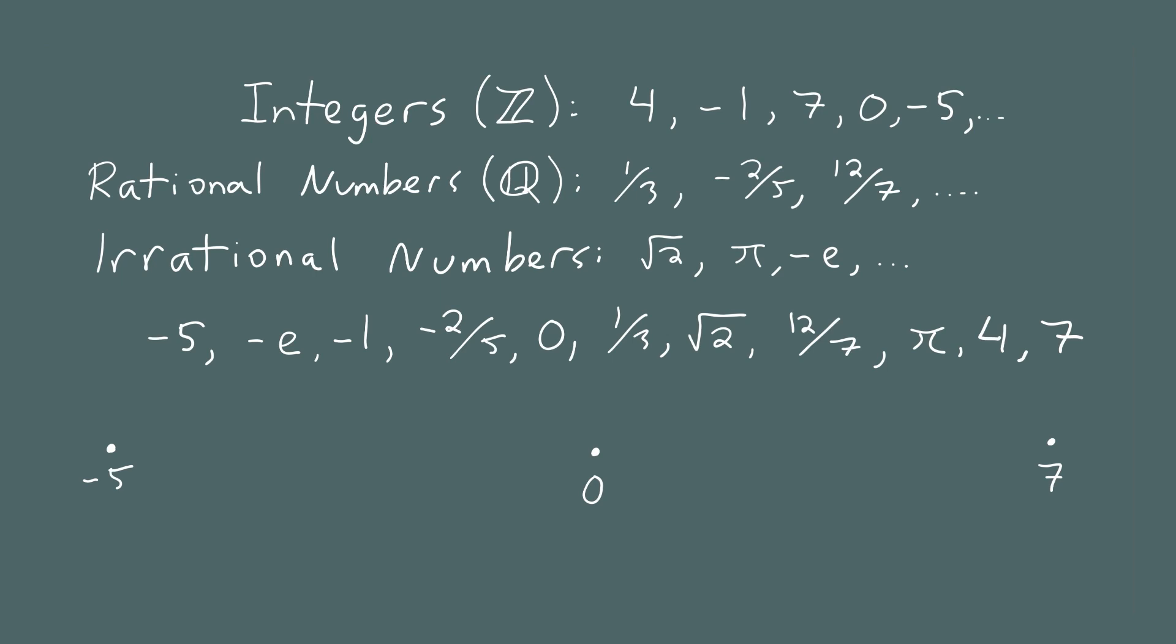Negative e is -2.71828, so that's a little to the left of halfway between 0 and -5. So -e would be right around here. -1 would be somewhere around here. And -2/5 is -0.4, so that would be somewhere around here.